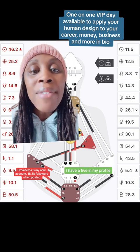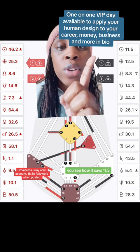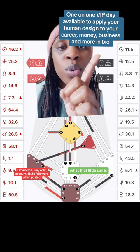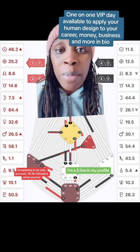So first and foremost, I have a five in my profile. You see how it says 11.5, what that little sun is. That's the five line. I'm a five line in my profile.